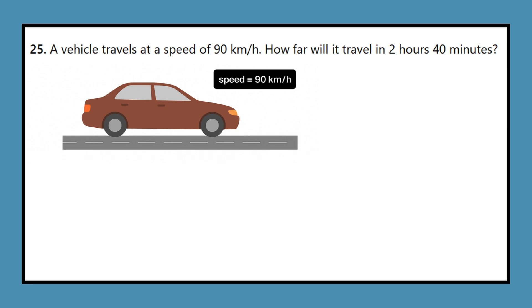Question 25: A vehicle travels at a speed of 90 kilometers per hour. How far will it travel in 2 hours 40 minutes?